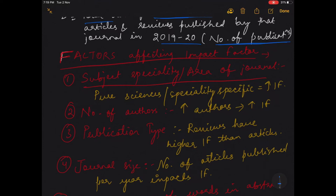First is the subject specialty or the area of journal. The journals which are having the subject specialty as pure sciences or are specialty specific, they have a high impact factor. Number of authors: if the number of authors increases, the impact factor of the journal also increases.